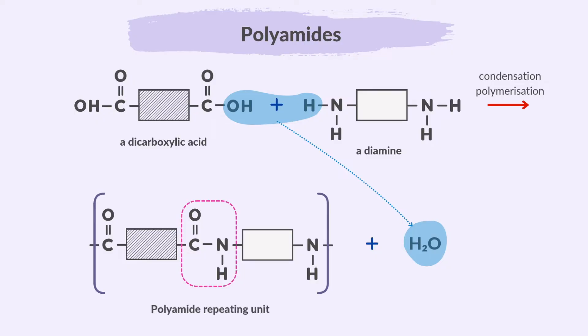This is the repeat unit of a polyamide from a dicarboxylic acid and a diamine. Each repeat unit in nylon contains an amide linkage, which is formed by the reaction of the amine group from the diamine and the carboxylic acid group from the dicarboxylic acid. We just saw how to deduce the repeat unit of a condensation polymer from a dicarboxylic acid and a diamine to a polyamide.